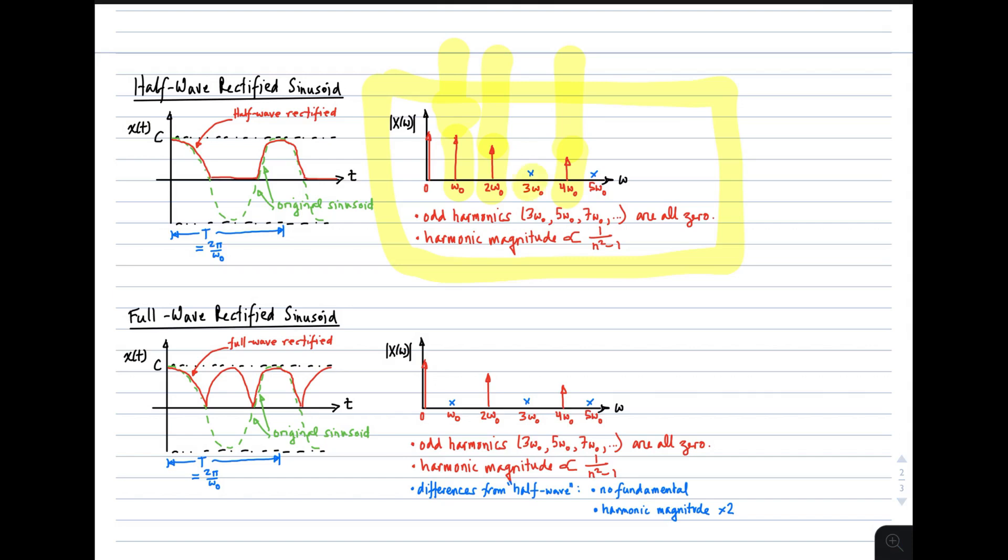Note that the odd harmonics, three times ω₀, five times ω₀, and so on, are all zero. Also, for this waveform, the harmonic magnitude goes as, or is proportional to, 1/(n²-1). So they fall off pretty quickly. That's simply reflecting the fact that a half-wave rectified sinusoid still looks a lot like a sinusoid, and the content that needs to be added to make it appear to be half-wave rectified is of relatively small magnitude.